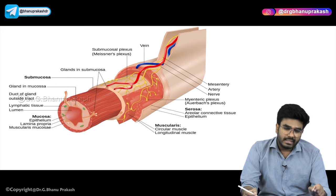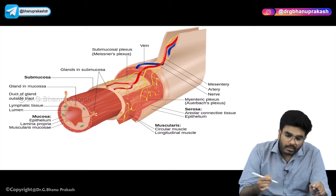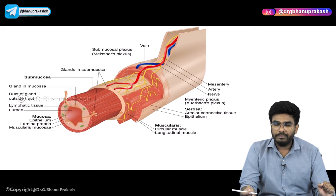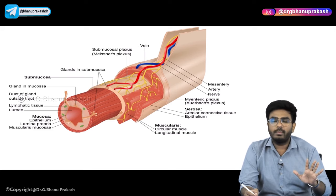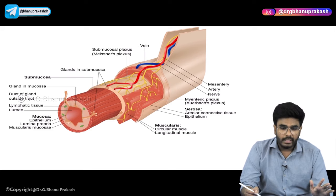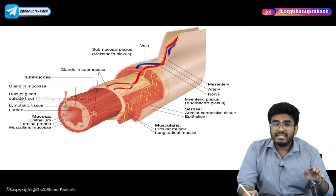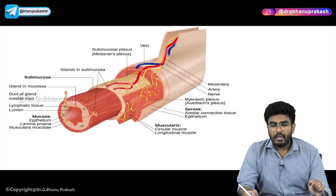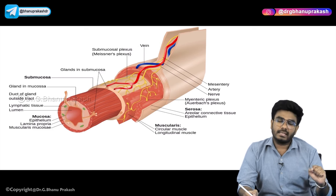The muscularis layer helps in peristalsis and GI motility. But muscularis mucosae does not have any role in GI motility. So never get confused - muscularis mucosae is a part of the mucosal layer of the stomach, and muscularis is a separate layer which helps in peristalsis.